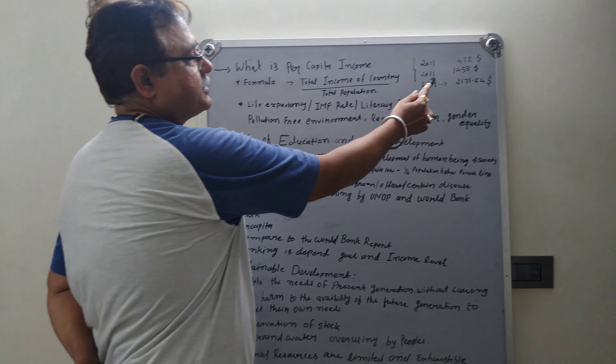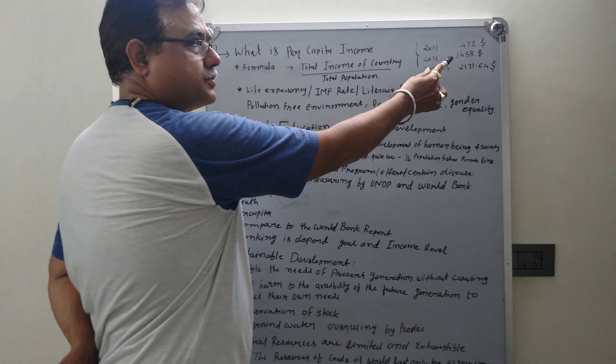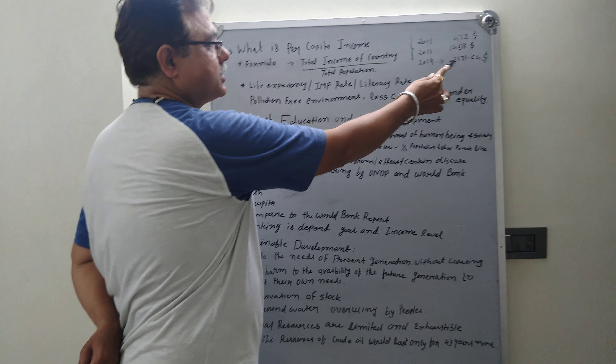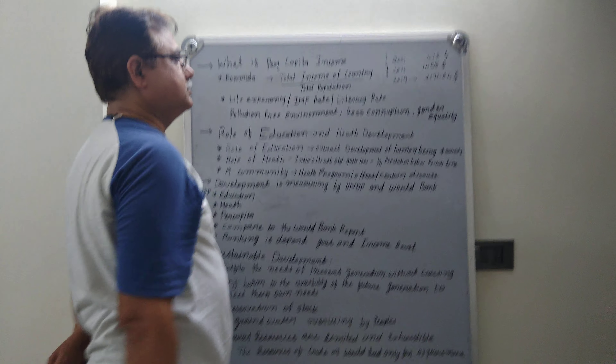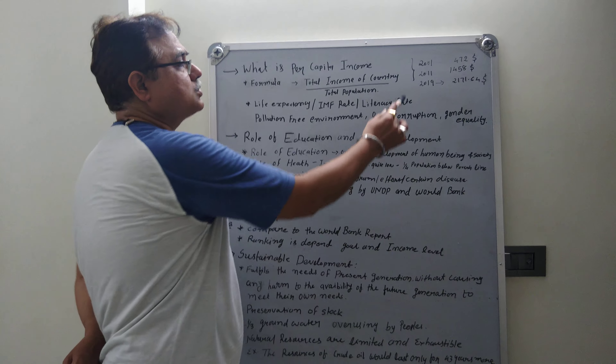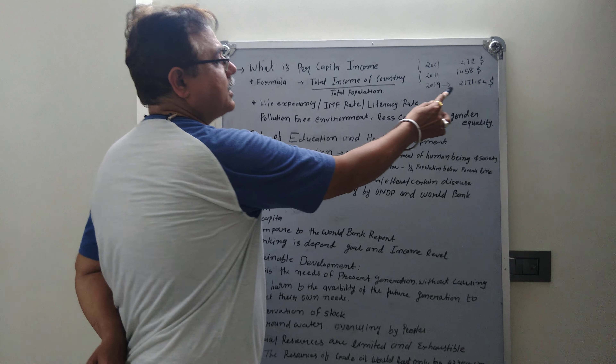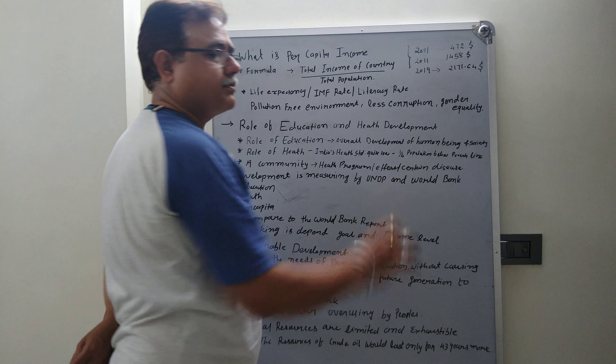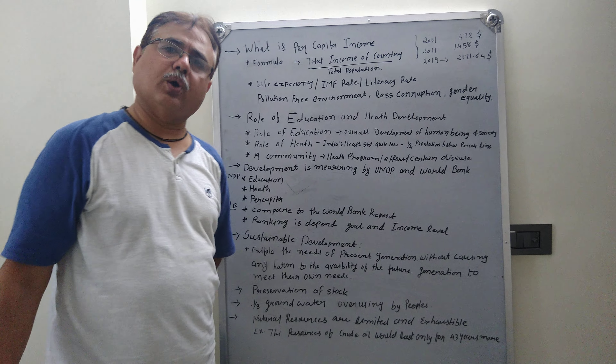In 2011, the per capita income was 1458 US dollars. In 2019, it was 2171 US dollars.